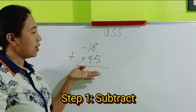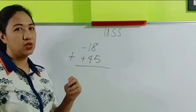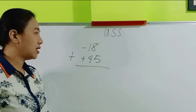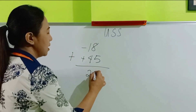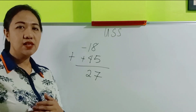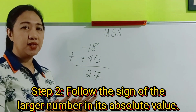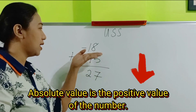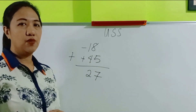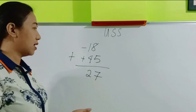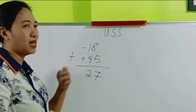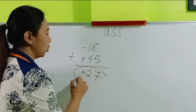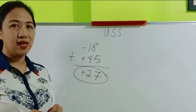You have to choose the bigger digit to be the minuend. So 45 minus 18 is 27. Next, let us follow the sign of the bigger digit in its absolute value. So which is bigger — 18 or 45? Of course, 45 is larger. Therefore, we have to follow the sign of positive 45, which is the positive sign.